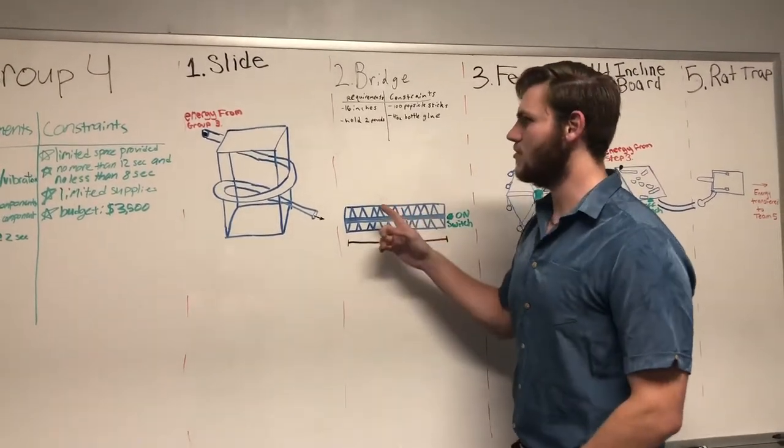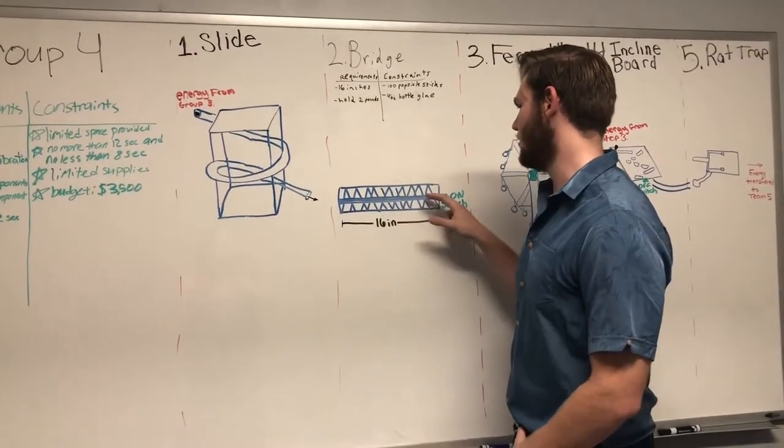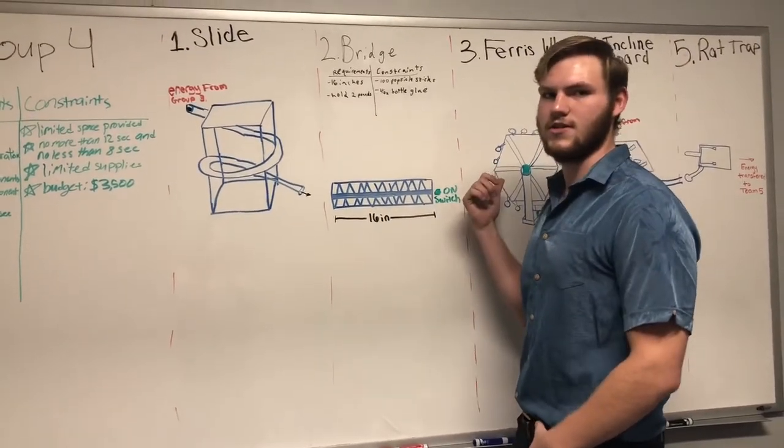The same marble that was in Step 1 will be transferred to Step 2. It will roll across the bridge, hitting a switch that transfers energy to the Ferris wheel on Step 3.